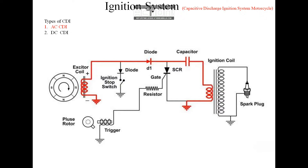Right now we will go through the construction. This is a magneto, or we can say it is an AC generator, which is located on the crankshaft — specifically on the left side of the crankshaft. It has two poles, or two magnets, arranged in such a way that it forms two south and two north poles. It also has some notches, or a peak of certain width.